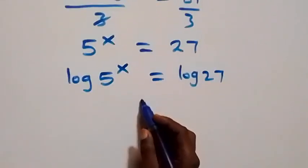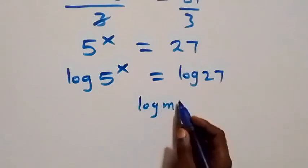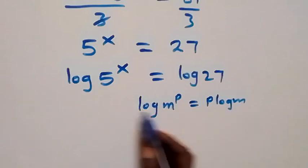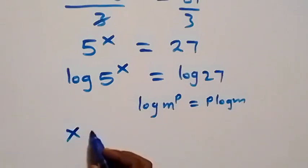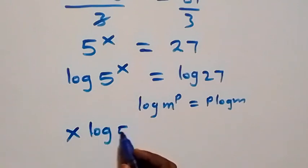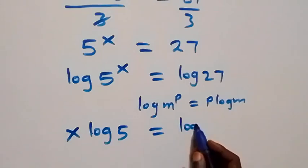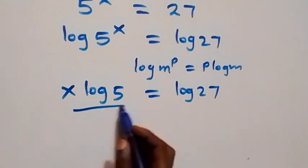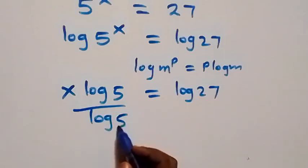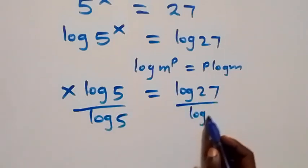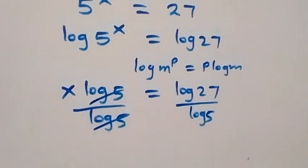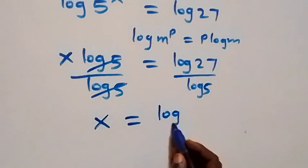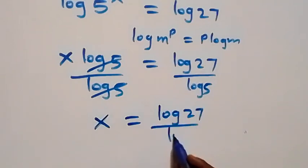When we apply the power rule of logarithms — log of m raised to power p equals p times log m — this becomes x times log 5 equals log 27. We then divide both sides by log 5; log 5 cancels on the left and we have x equals log 27 divided by log 5.